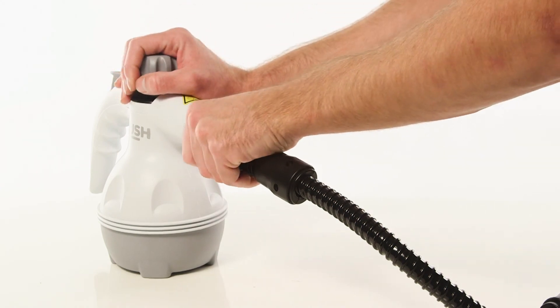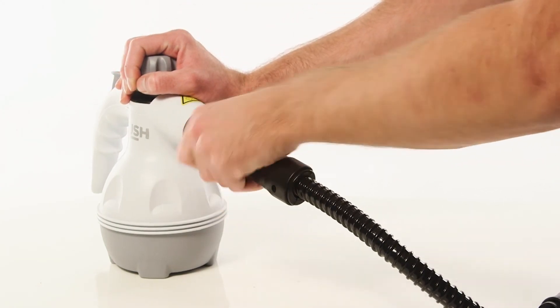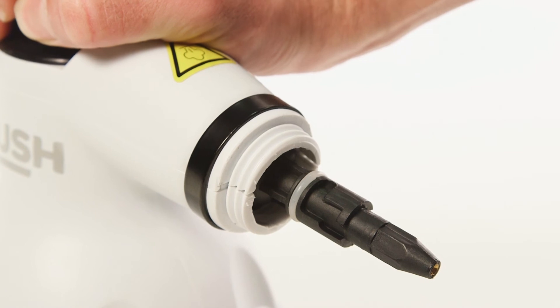To remove accessories, rotate the accessory anti-clockwise and pull it away from the steam cleaner.